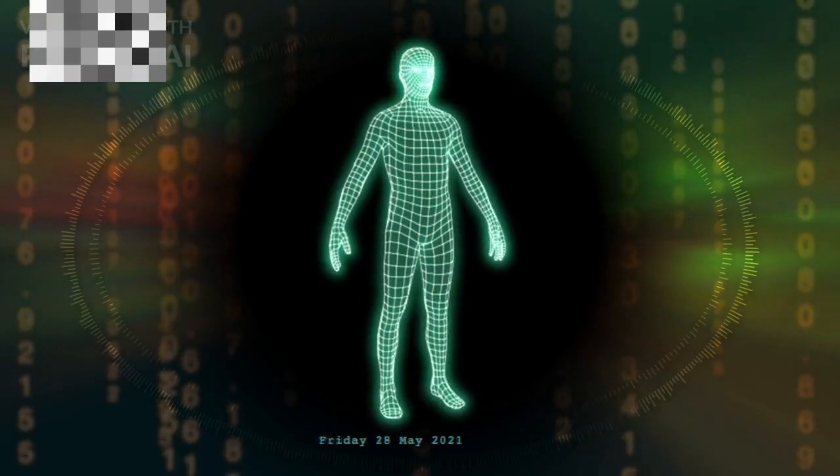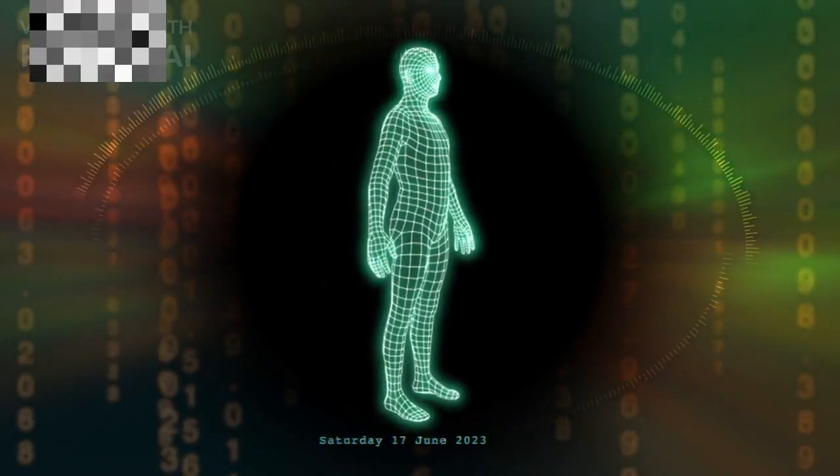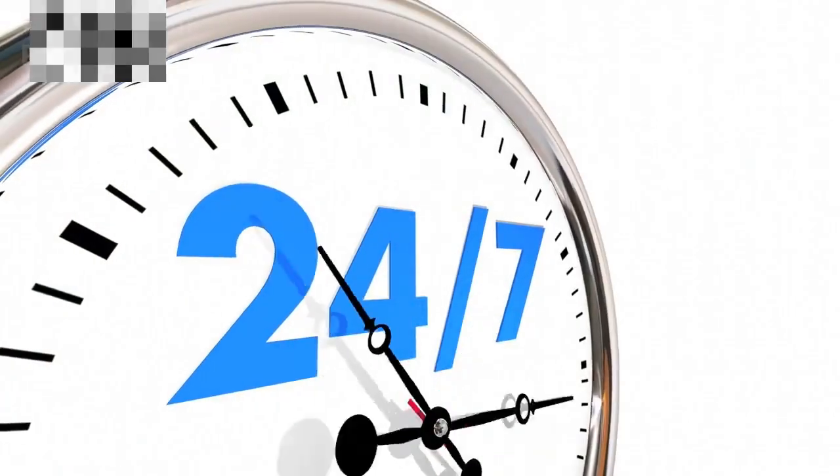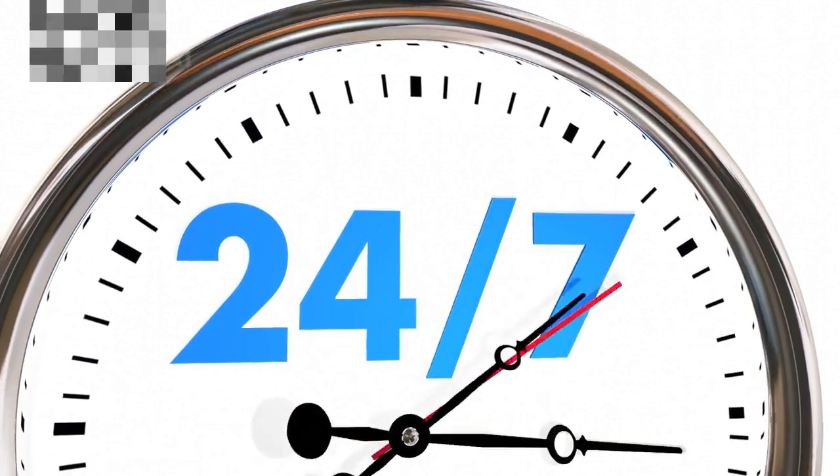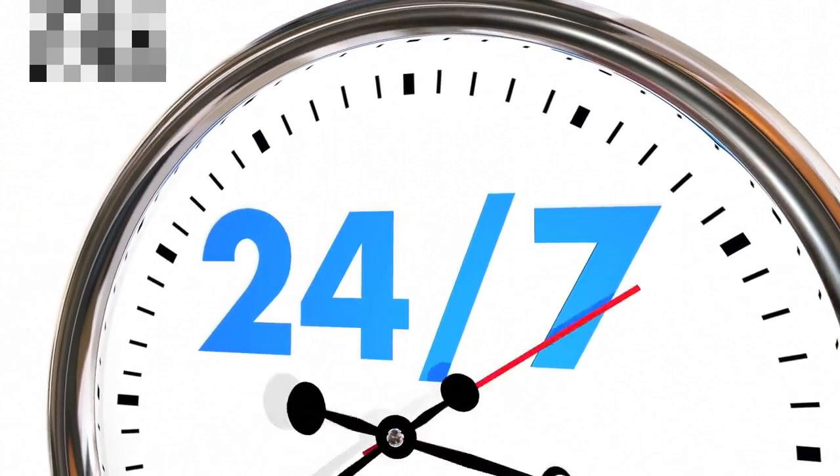However, this human-defined time system differs from the true nature of time. The fixed values of 24 hours in a day and 365 days in a year are approximations, hinting at the elusive essence of time.